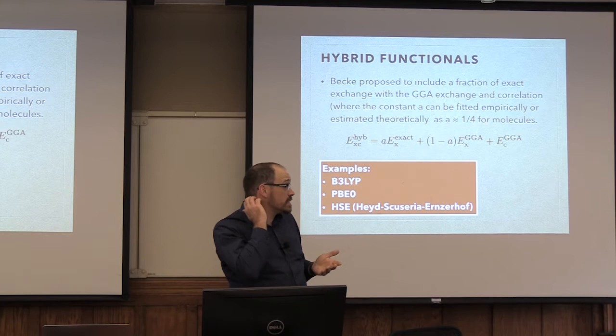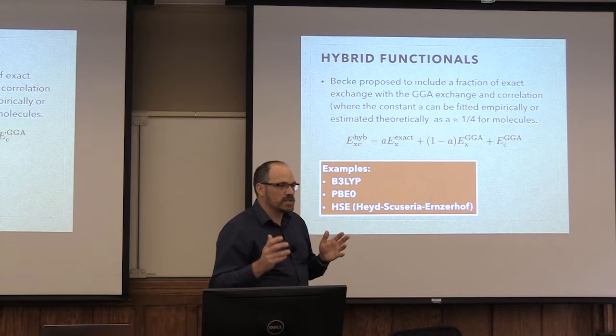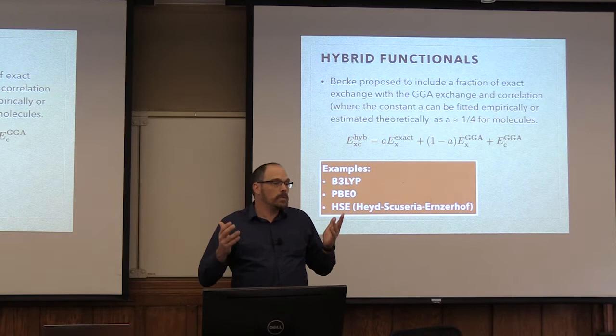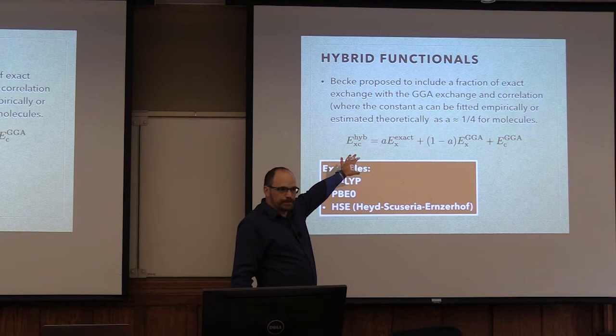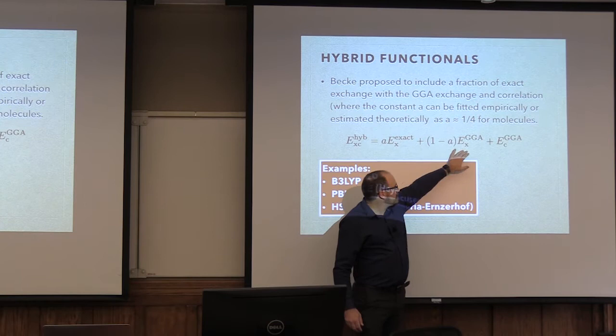Hartree-Fock gets exchange exactly right within the single-electron approximation — by building the Slater determinant, you ensure the wave function is anti-symmetric, so exchange is treated correctly. Because of the difficulty of using exchange in DFT, people have decided to calculate the exact exchange as if it were Hartree-Fock, and then combine a piece of GGA with a piece of exact exchange.